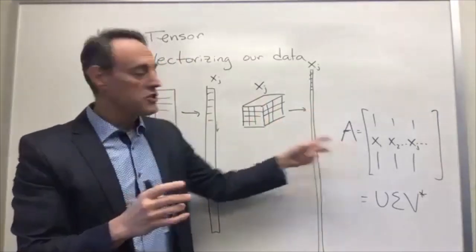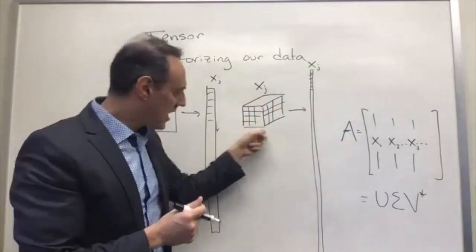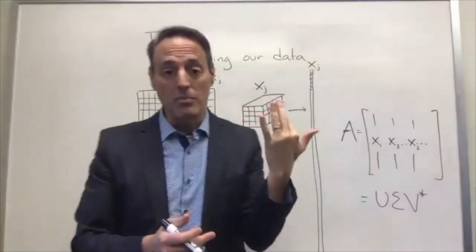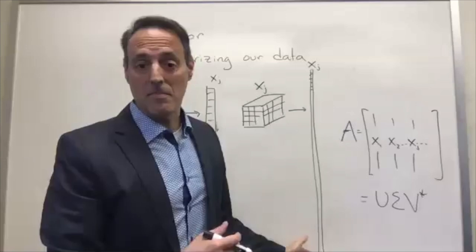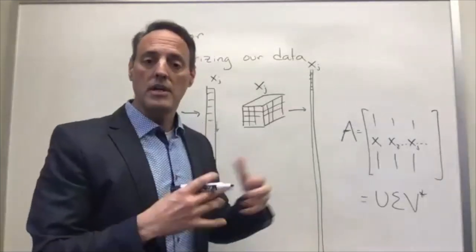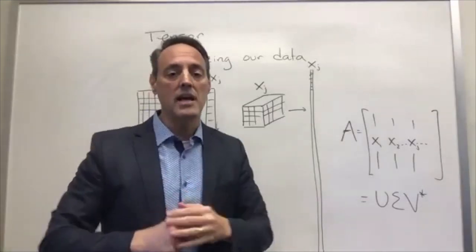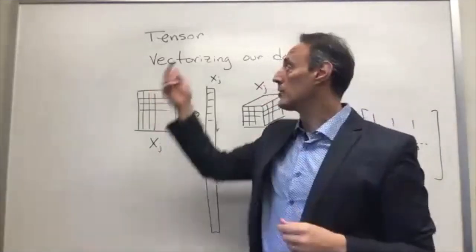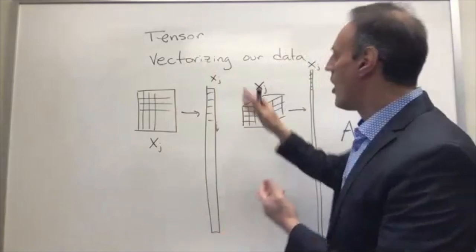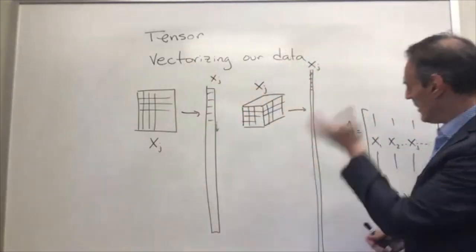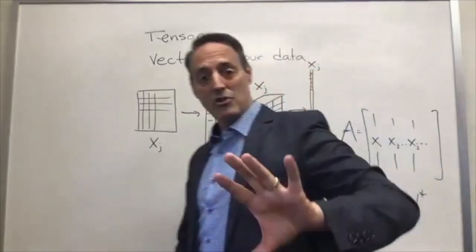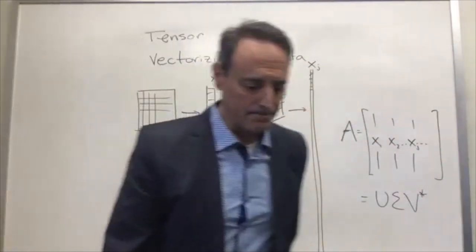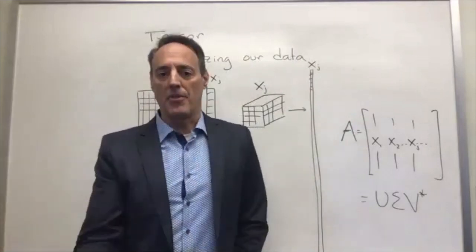You can see this vectorization process, especially if you have multi-dimensional data, gets to be very big. For instance, if I have a cube with 100 points in each direction, the total amount of data is 100 cubed - so when I vectorize it, this thing is massive. This is one of the interesting issues about this vectorization of data. You should understand we vectorize data all the time, and in fact we rarely work with tensor decompositions - we instead always do this step first: vectorize, put it into a matrix, and then do your linear algebra with the vectorized data.